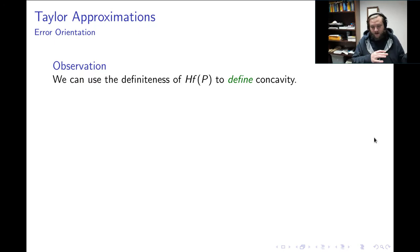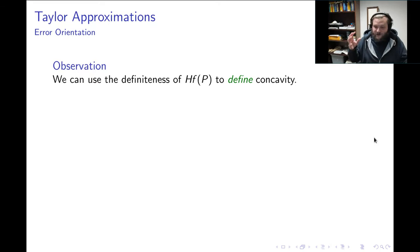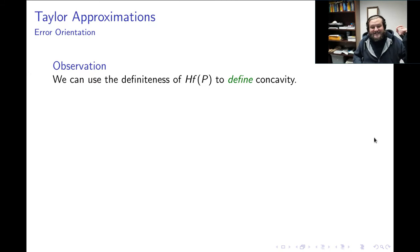Now let's think about how we can make an analogy to Calc 1. In Calc 1, we use the sign of the second derivative to figure out the concavity of our function. In this situation, the second derivative is an n-by-n matrix — that's the Hessian. The Hessian is a real symmetric matrix which defines a quadratic form which has definiteness. So the idea is that we use the definiteness of the Hessian to define the concavity of our function.